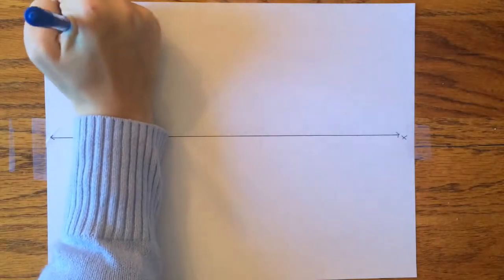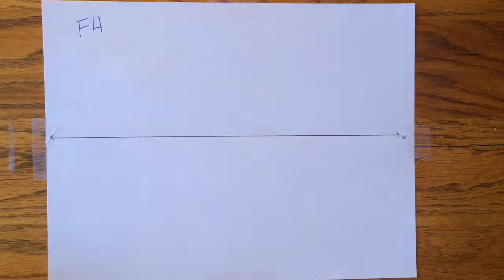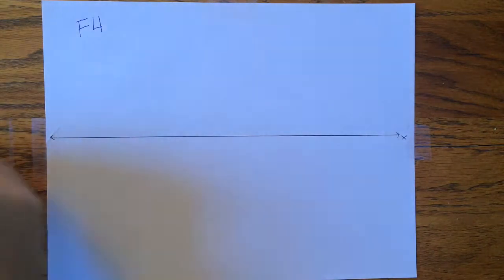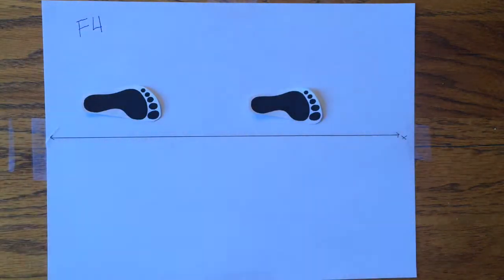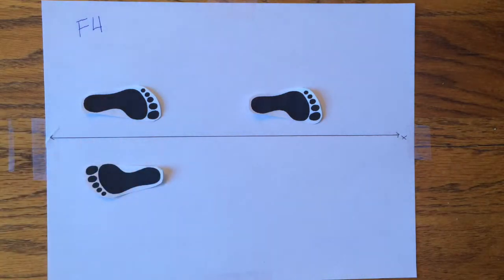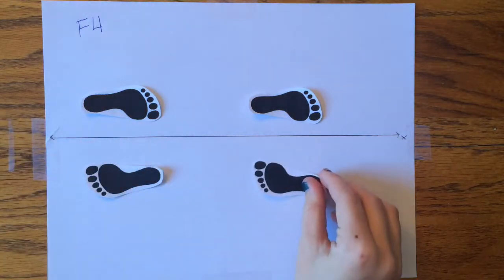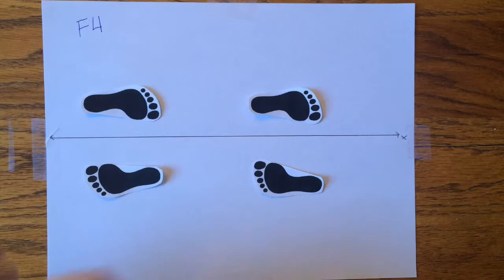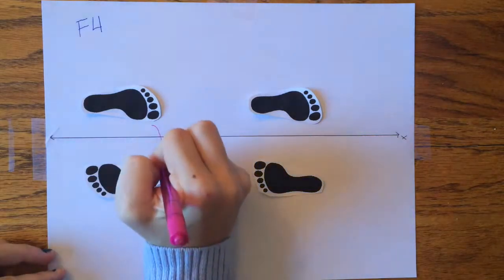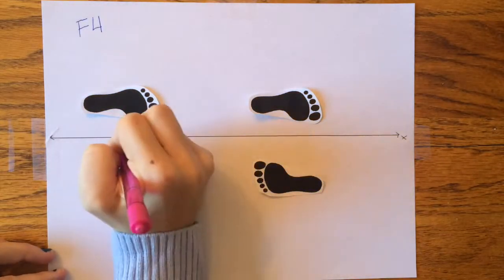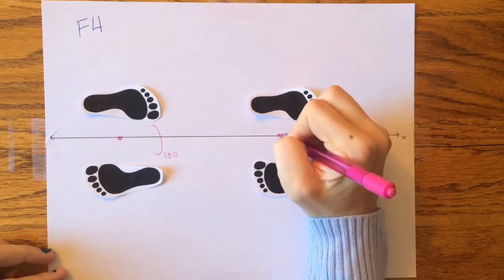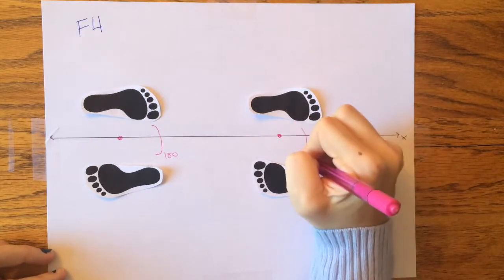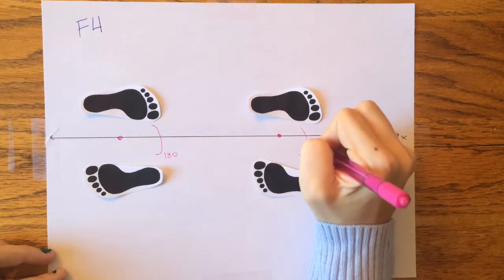F4 is a result of translation and rotation. First, the original image is repeatedly translated along the x-axis. Then, each image is rotated. Recall that for frieze patterns, each rotation is 180 degrees around the rotational origin. The point on the x-axis below the center of the image is used as the rotational origin.